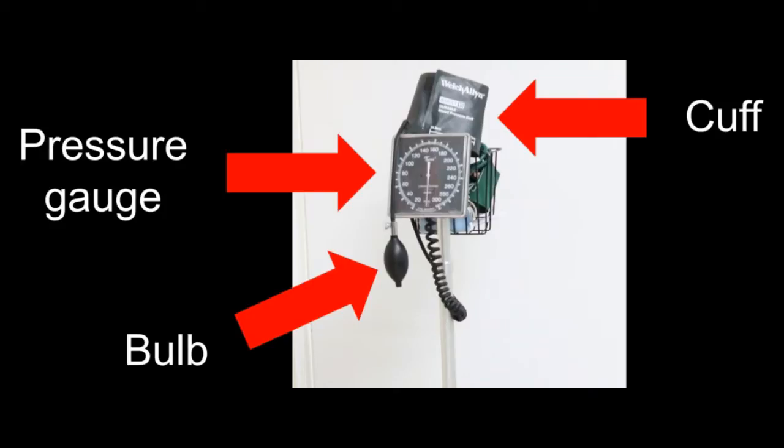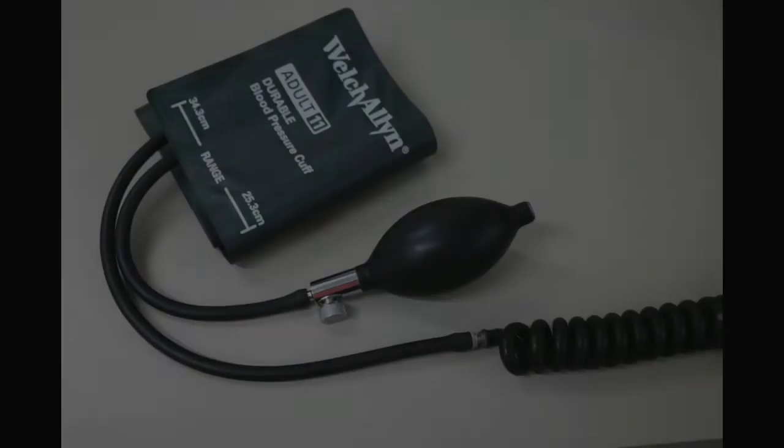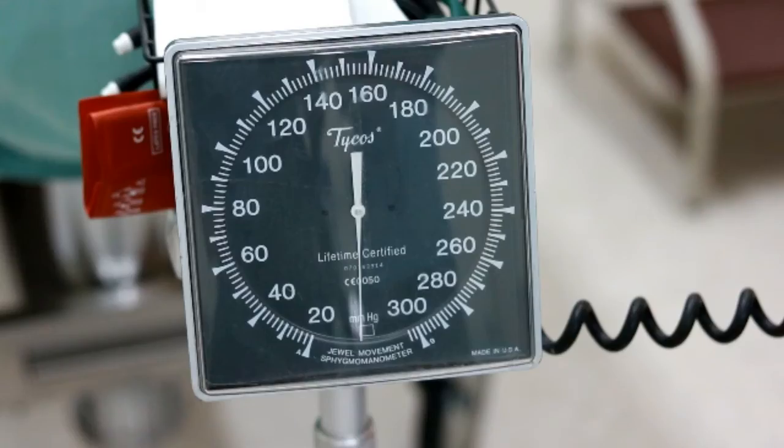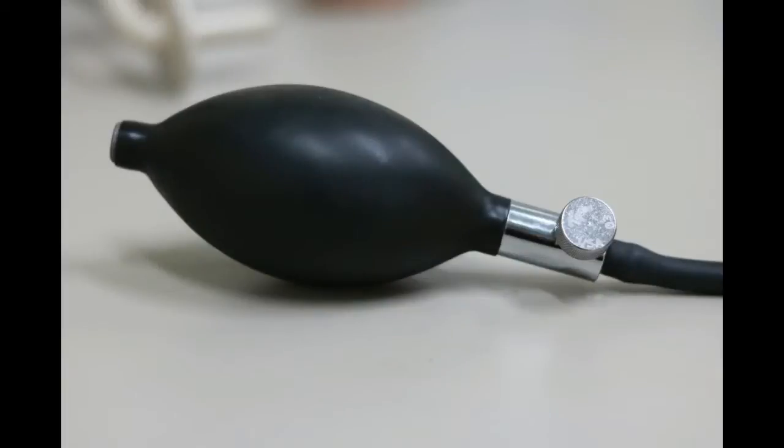There are two main methods used for measuring blood pressure. We will start by describing techniques for measuring blood pressure manually. Necessary equipment includes the blood pressure cuff, which is used to apply pressure to the patient's arm and restrict blood flow during the measurement, the manometer gauge, which shows the current pressure in the cuff, and the bulb, which is pumped to increase pressure in the cuff.